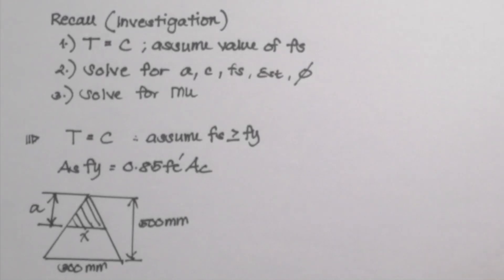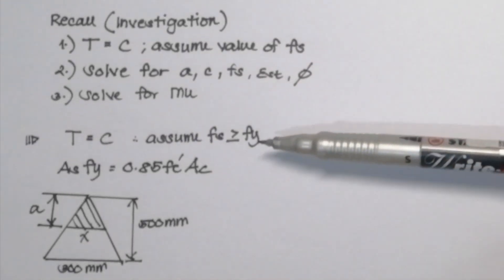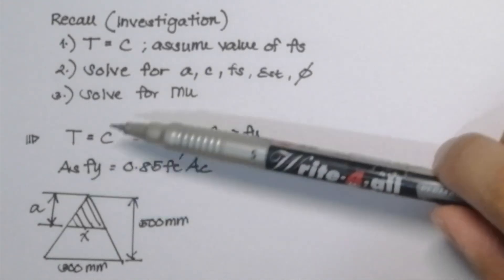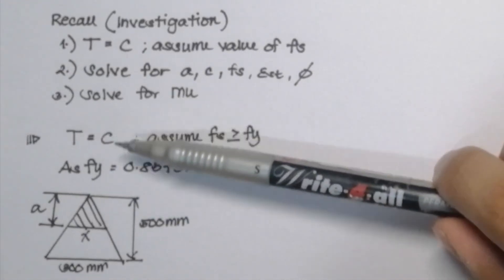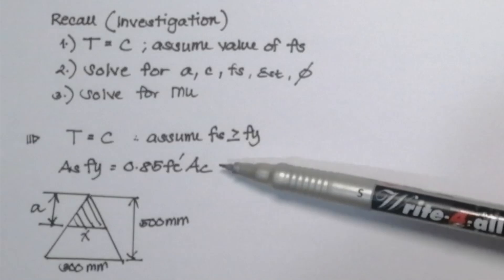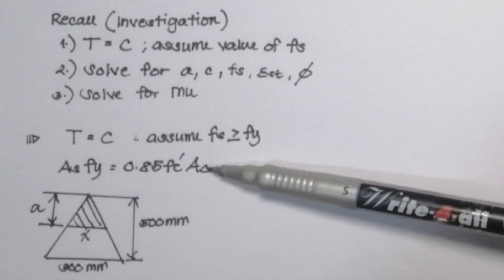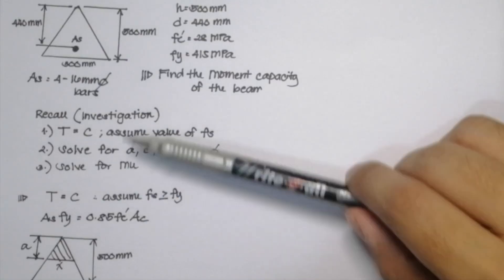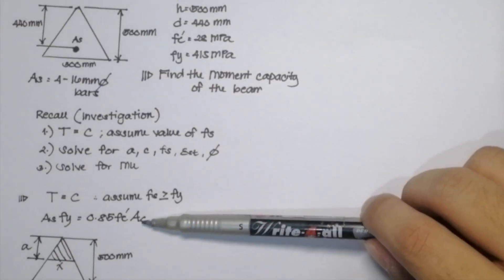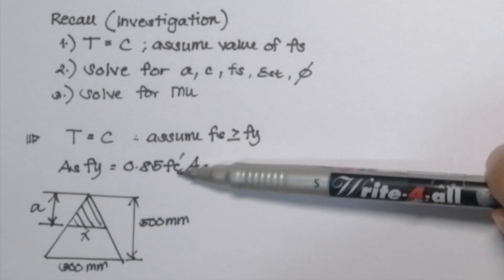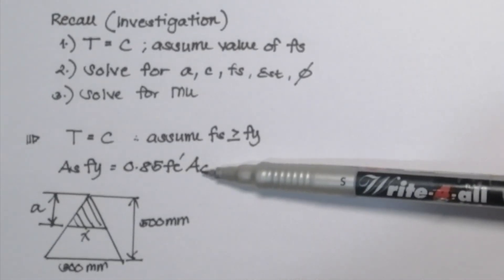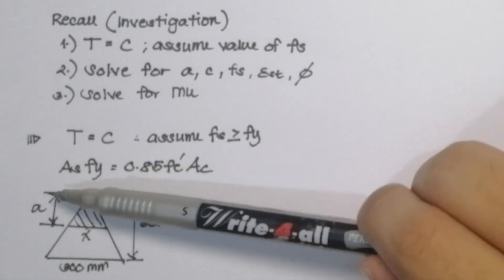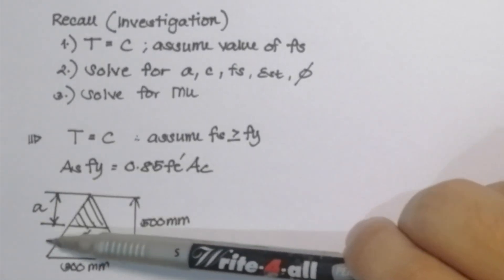First, we equate T = C and assume Fs is greater than Fy. Simplifying, As·Fy = 0.85·fc'·Ac, where Ac is the area of the compression block. We are not going to use A times B since our figure is a triangle, so we use Ac instead. The shaded region in the figure shows the area of the compression block.